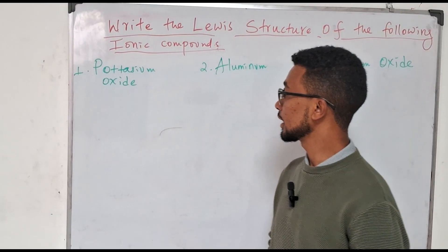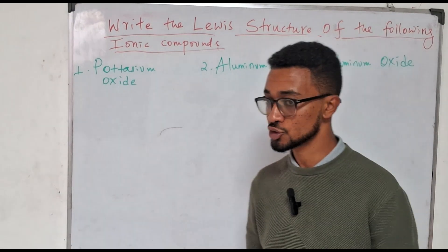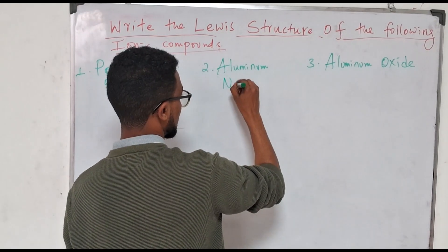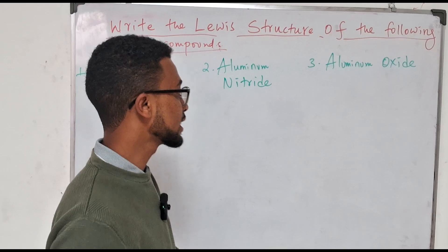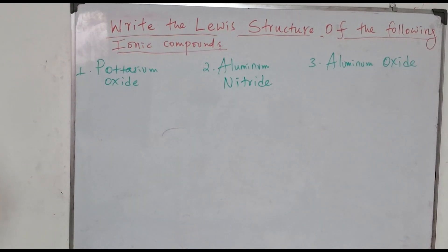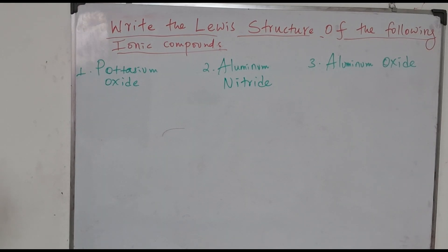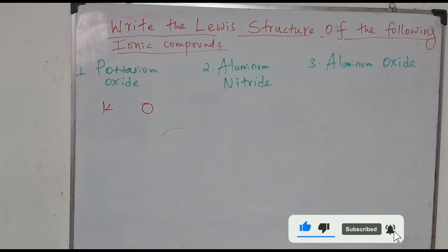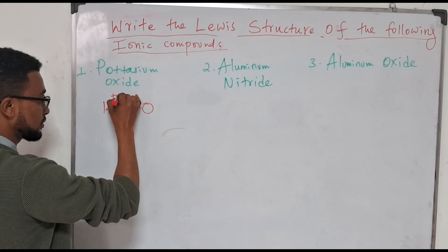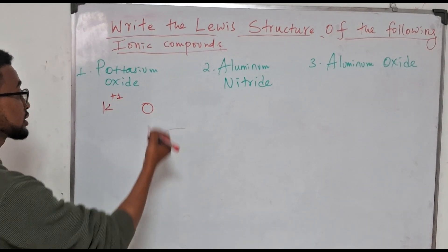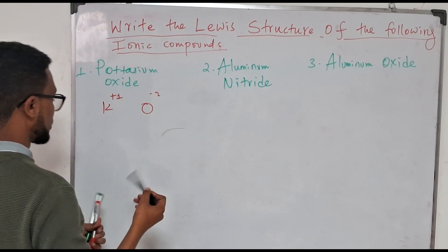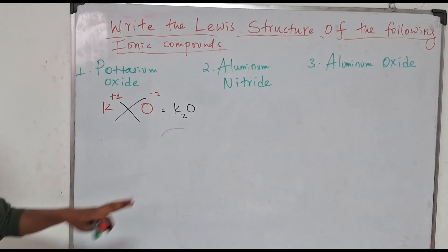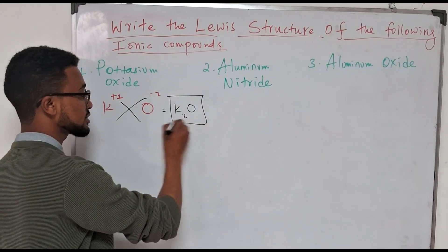Now let's look at three examples of writing Lewis structures for ionic compounds: potassium oxide, aluminum nitride, and aluminum oxide. For potassium oxide, potassium is a Group 1 metal with one electron in its last shell, giving it a +1 ion charge. Oxygen has a -2 ion charge. Criss-crossing these gives us K₂O — one formula unit of potassium oxide has two potassiums and one oxygen.